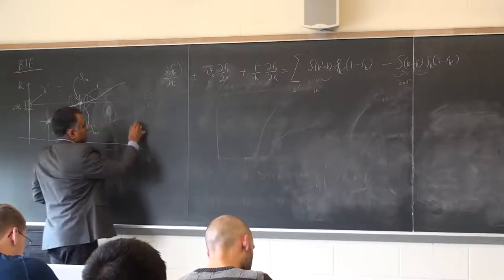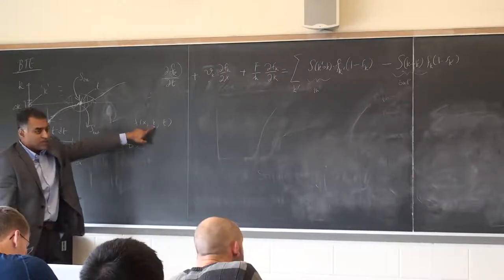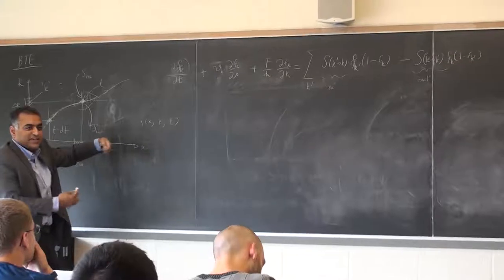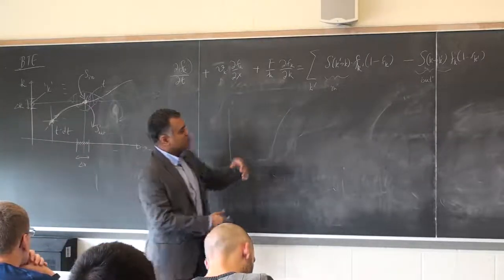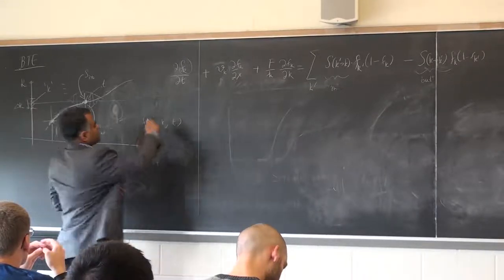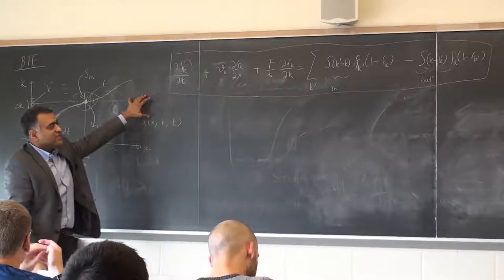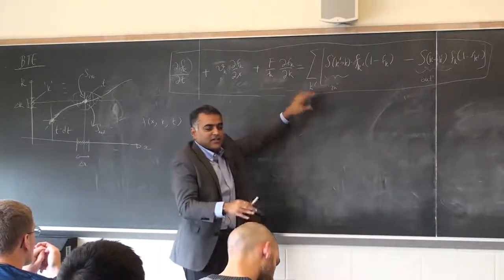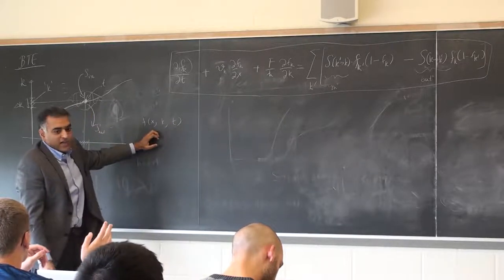The function lives in seven dimensions, but its physical meaning is very clear—it's always a value between 0 and 1. The Boltzmann transport equation is really just bookkeeping; there's no new physics inside. We're just counting states and saying probability must be conserved. That's the only message.